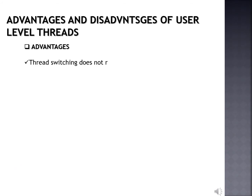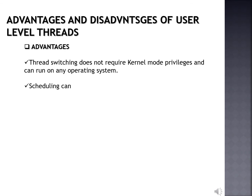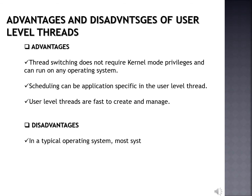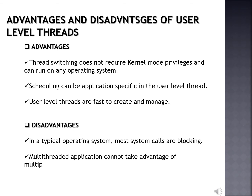About the advantages of user level threads: thread switching does not require any kernel mode privileges. User level threads can run on any type of operating system. Scheduling can be application-specific in the user level thread. User level threads are fast to create and manage. About the disadvantages: in a typical operating system, most system calls are blocking. Multi-threaded applications cannot take advantage of multiprocessing.